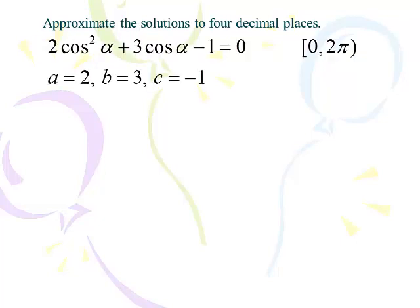We'll have to use the quadratic formula. It's important to understand what a, b, and c are — we're going to leave the cosine out of it. a is 2, b is 3, c is negative 1. We're going to set cosine α equal to the quadratic formula using those values.